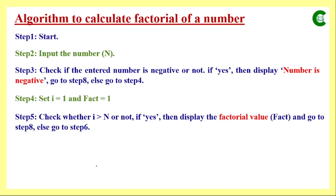If i is greater than n, we display the factorial value stored in fact and stop. For example, if n is 0, then i starts at 1, which is greater than 0, so the condition is true. The variable fact still holds 1, and since 0! = 1, we correctly display 1 and move to Step 8 (Stop).